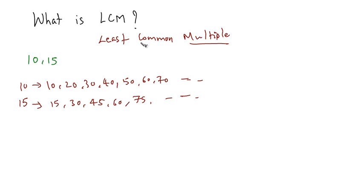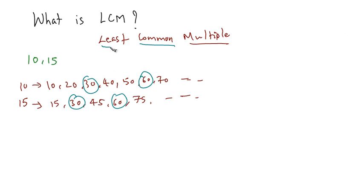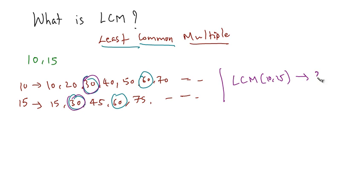The next word is 'common.' So what are the multiples that are common in these two numbers? So 30 is common, then 60 is common, and there may be some more common multiples. Now it says 'least,' so the least of the common multiples — the smallest of these common multiples — is 30. So the LCM of 10 and 15 is 30.